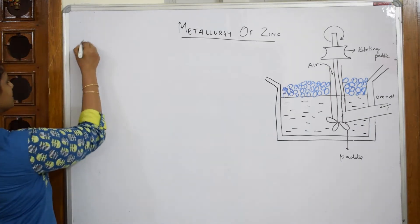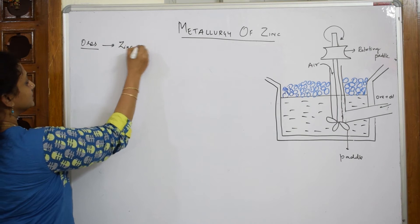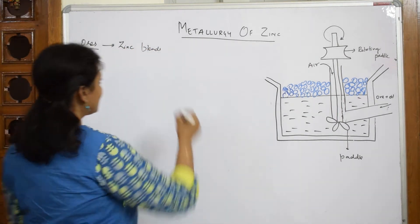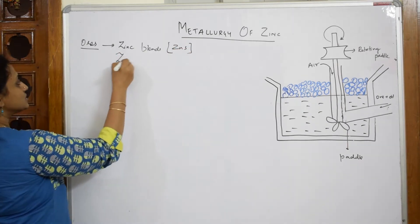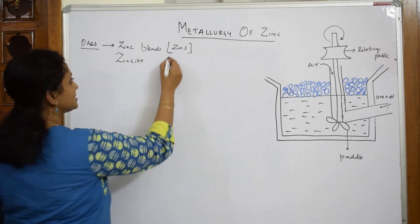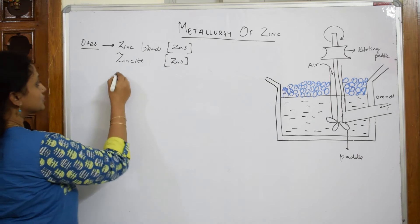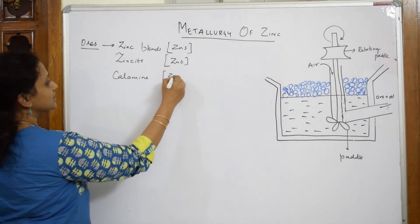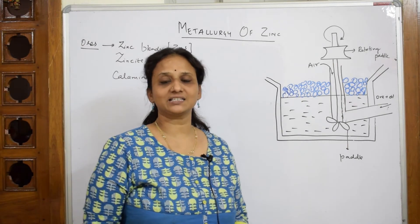Let us see what are the ores of zinc. The first ore is zinc blende, with formula ZnS. Then we have zincite, that is zinc oxide. And we are also going to use one more ore of zinc, that is calamine, which is zinc carbonate. So these are the three ores from which I can extract the metal.